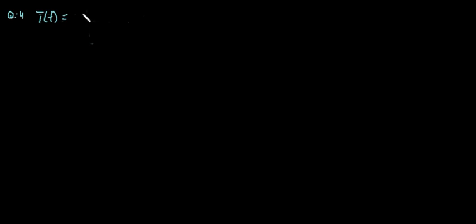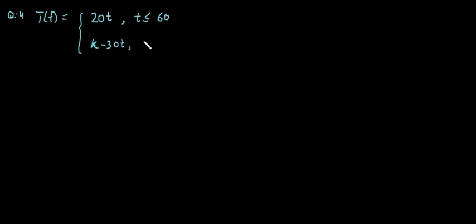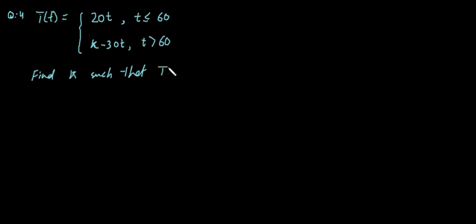Suppose we have a function T(t) defined by two pieces: the first piece is a formula in t for values of t less than or equal to 60, specifically 20t; and the second piece is k minus 30t for values of t greater than 60. We need to find the value of k such that the given function is continuous at t equals 60.